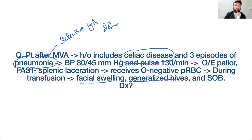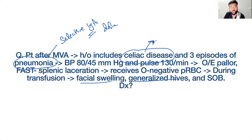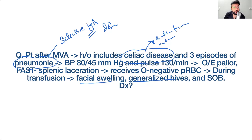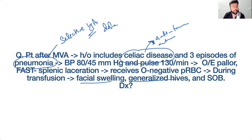Selective IgA deficiency: IgA provides mucosal immunity, so deficiency leads to recurrent pneumonia, recurrent mucosal infections, and an association with celiac disease. In celiac disease, the diagnostic antibodies — anti-tissue transglutaminase and anti-endomysial antibodies — are IgA in nature. In patients with selective IgA deficiency, these antibodies may be falsely negative. The definitive diagnosis requires duodenal biopsy showing villous atrophy and intraepithelial lymphocytes.